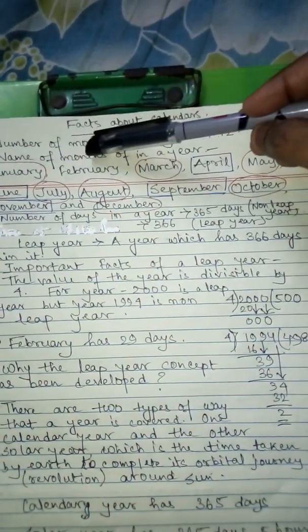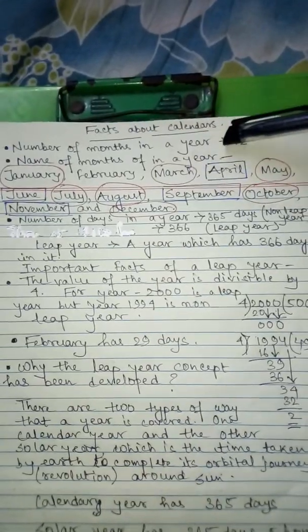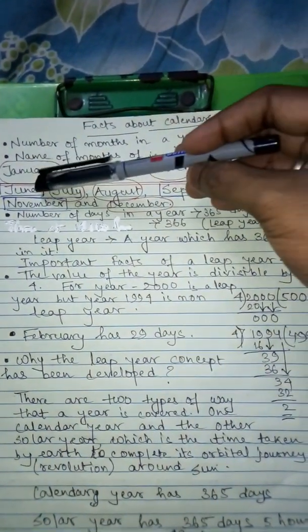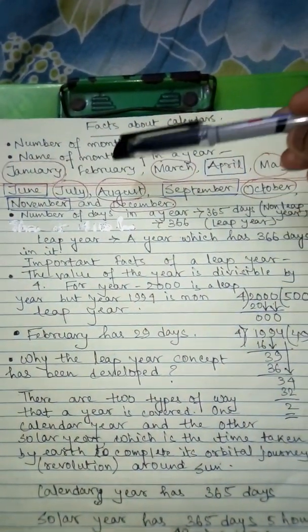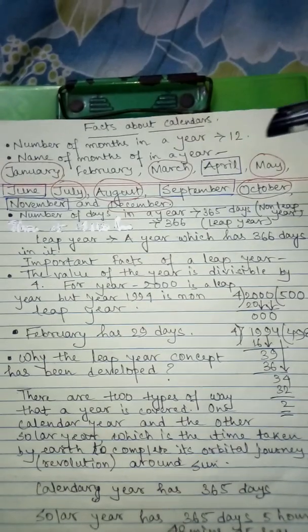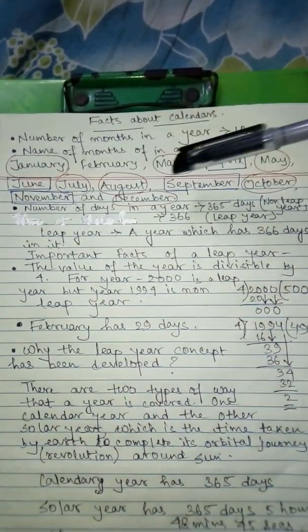The months of the year are: January, February, March, April, May, June, July, August, September, October, November, and finally December.